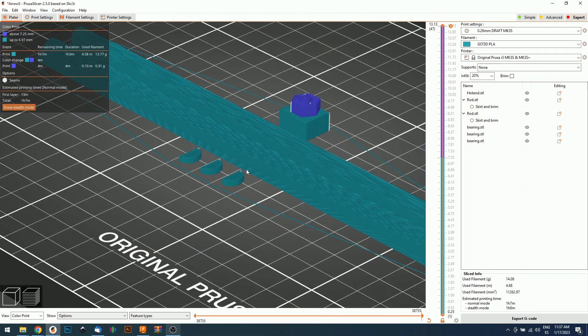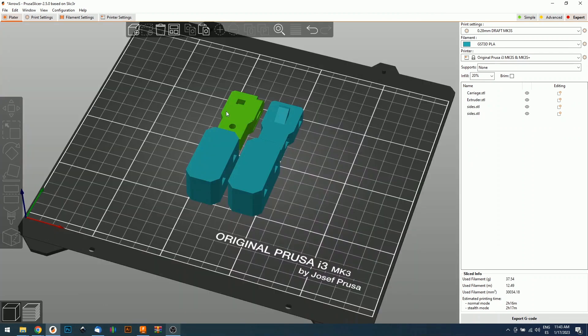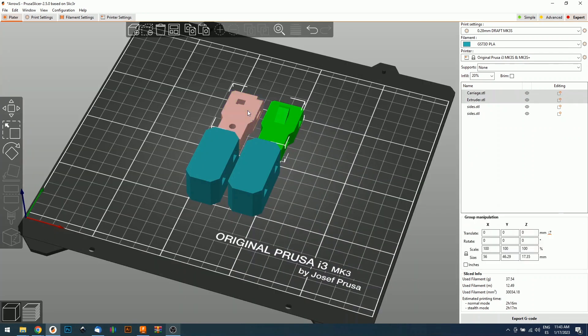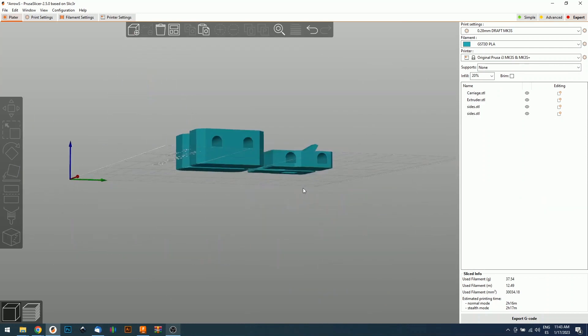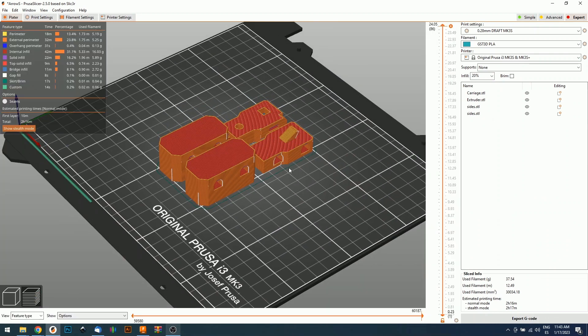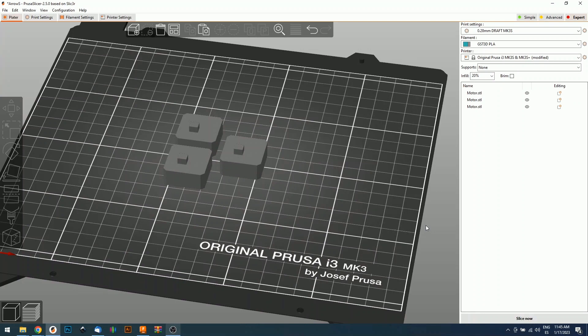For the carriage, the extruder, and the sides, which we need two of, we don't need to do anything. Just place them on your build plate and slice it. That's pretty much it.